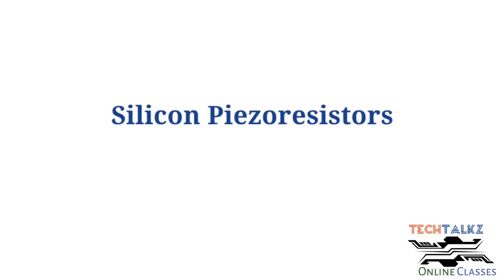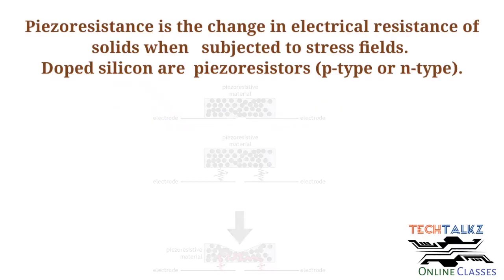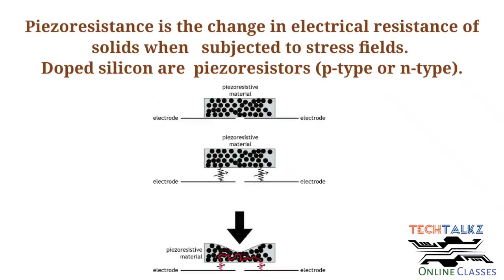Our next topic is silicon piezo resistors. What are the characteristics? Piezo resistance is defined as the change in electrical resistance of solids or a piece of material when subjected to a stress field.